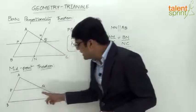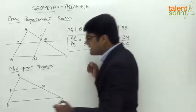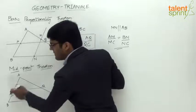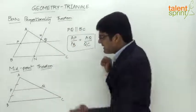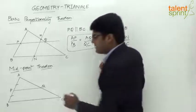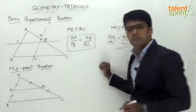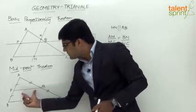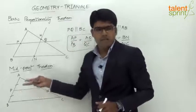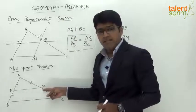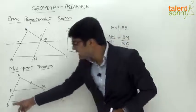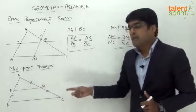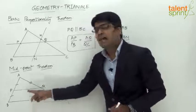Assume that P is the midpoint of side AB and Q is the midpoint of side AC. This means P divides AB into two equal halves, so AP = PB. Likewise, Q divides AC into two equal halves, so AQ = QC. When we join the two midpoints of two sides of a triangle, we get a line — as seen here — which will be parallel to the third side BC.